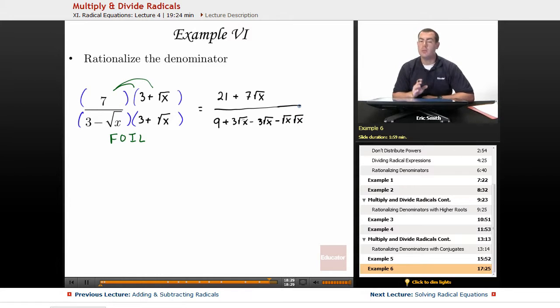If we do things correctly, we should get rid of all those radicals in the bottom. Plus square root and minus square root, those two will take care of each other. Square root of x times the square root of x will give me just an x.